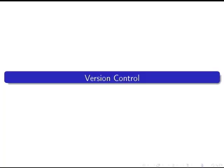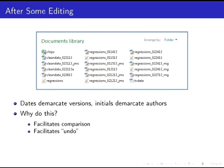Another tool from software engineering is version control. Going back to the earlier example: we have a directory filled with the February 21st 2013 version of clean data, the February 21st 2013 underscore JMS version, another version from the same day with 'A' at the end, and others from different dates. This is a common convention — using dates to demarcate versions and initials to demarcate authors.